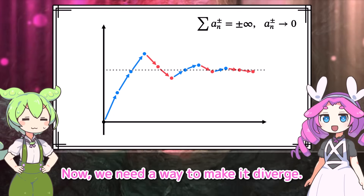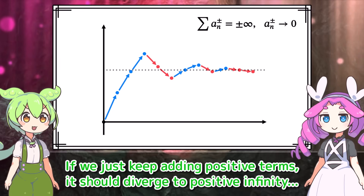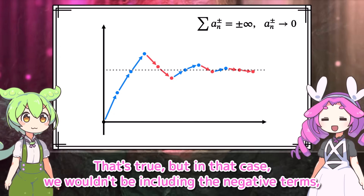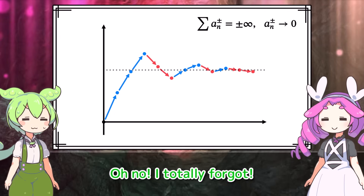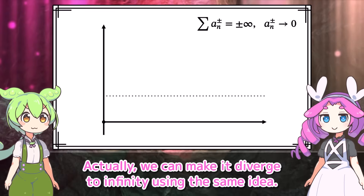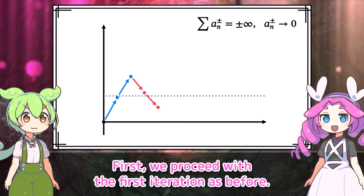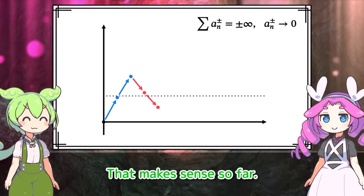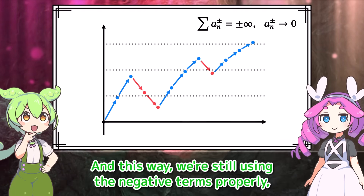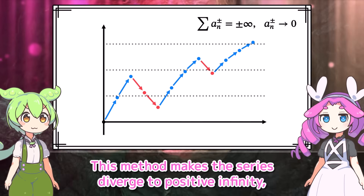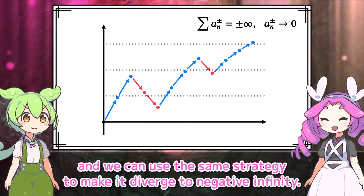Now we need a way to make it diverge. If we just keep adding positive terms it would diverge, but we wouldn't be including the negative terms, so it wouldn't count as a proper rearrangement. We can make it diverge to infinity using the same idea: proceed with the first iteration as before, but on the next iteration go above a higher boundary. Repeating this process, we keep increasing the value infinitely. We're still using the negative terms properly, so this counts as a rearrangement. We can use the same strategy to make it diverge to negative infinity.